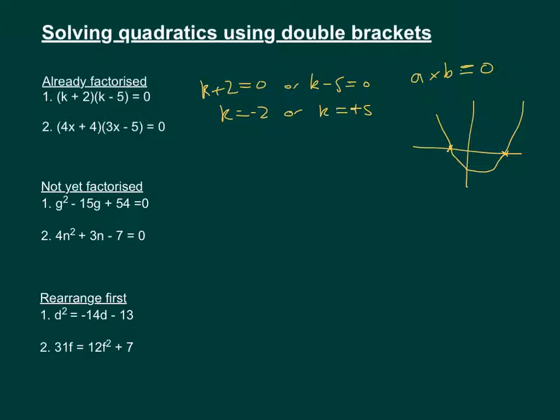Let's move on to the next one. We've got 4x plus 4 times 3x minus 5. So again, exactly the same method. One of the brackets has to be 0. So 4x plus 4 equals 0, or 3x minus 5 equals 0.